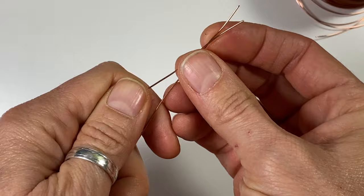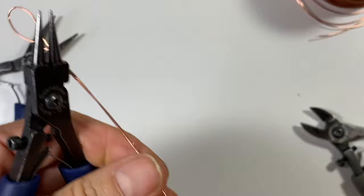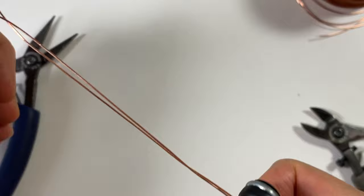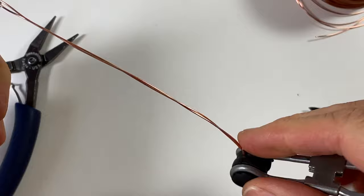One end you can clamp or hold in a tool. Straighten out your wire. I'm going to hold the other end in my round nose pliers like that, keep it taut and just start twisting. Of course this is going to take a little bit of time because you're twisting it by hand, but it's doable.